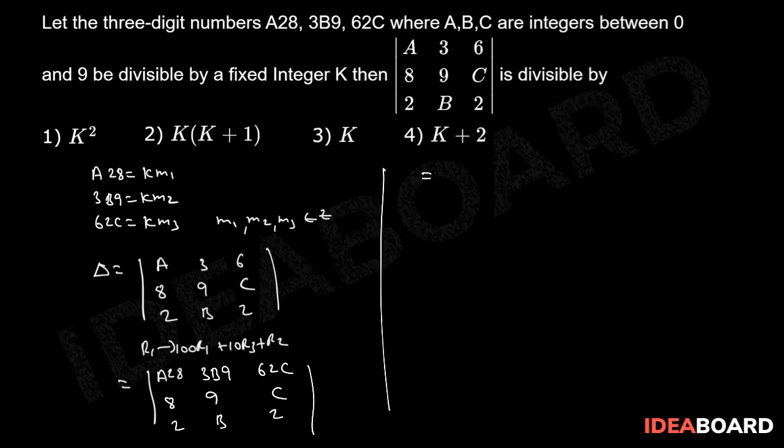Now, this will be equal to the determinant of A28 means we can write KM1. Similarly, 3B9 means KM2, 62C means KM3, 8, 9, C, 2, B, 2.